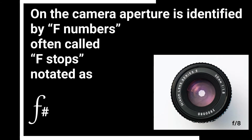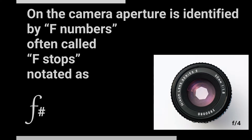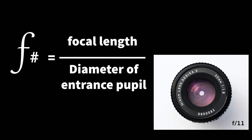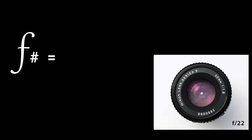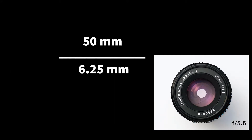The camera's aperture is identified by F numbers, or F stops, notated as a small hooked F and the number. This number is the answer to a simple division problem, which is the focal length of the lens divided by the diameter of the pupil. For instance, if you're using a 50mm lens and the diameter is 6.25mm, the F number is 8.